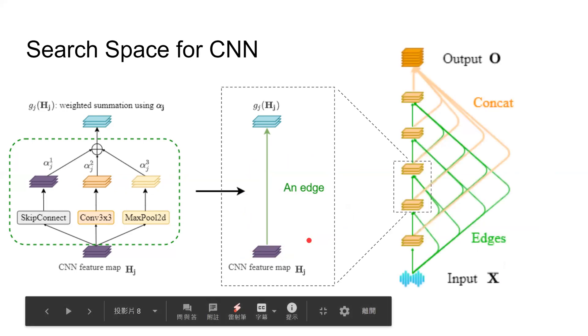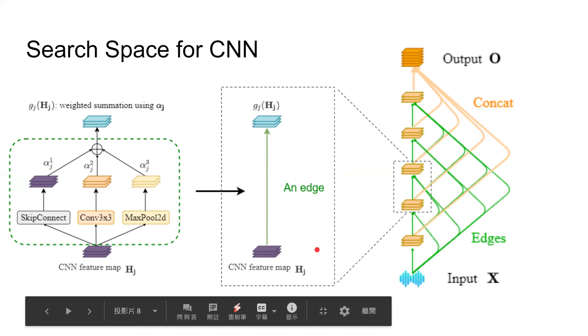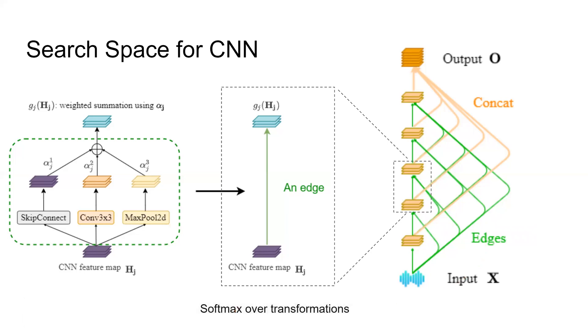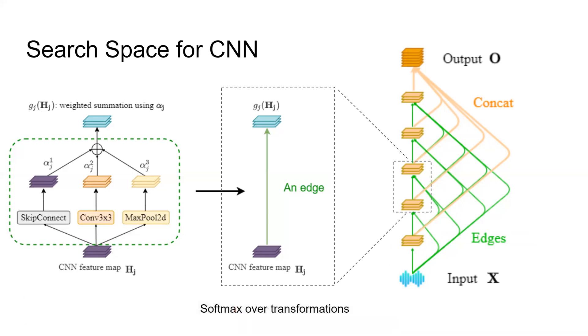Then for the whole search space of DARTS, we can define many intermediate feature maps. For each feature map, there are input edges connected with all its previous feature maps. The feature map outputs of these input edges are summed into one final feature map. And the variables alpha in softmax are jointly trained with parameter weights directly by gradient descent. This optimization process can be considered as controlling the architecture and parameter weights together.